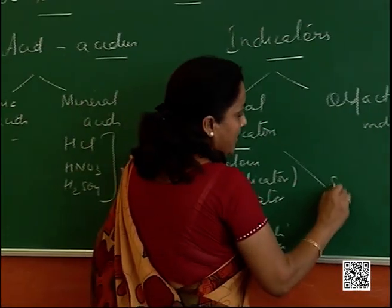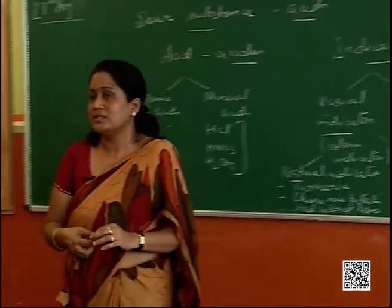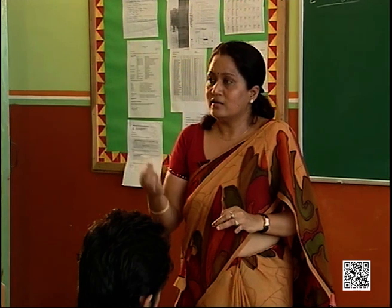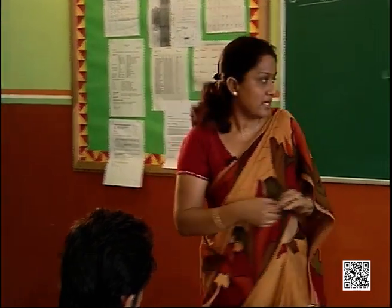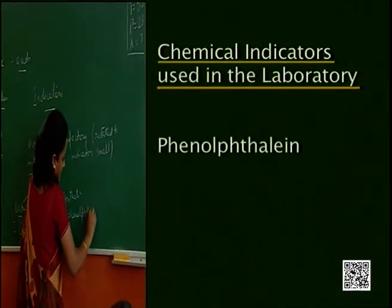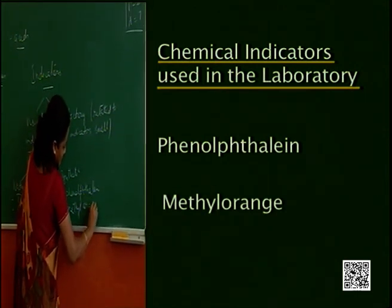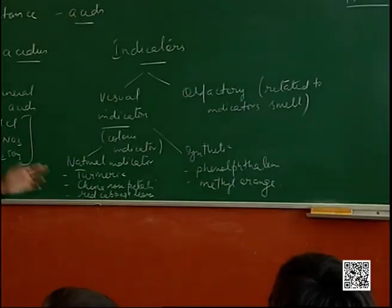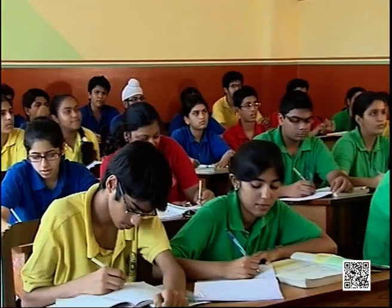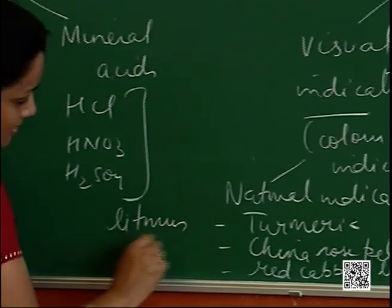Then there are certain synthetic indicators — chemicals which don't occur naturally but can also be used to test whether a substance is acidic, basic, or neutral. Two such indicators commonly used in the lab are phenolphthalein and methyl orange. There is one more very common natural indicator — litmus solution, which is available in two colors: red and blue.